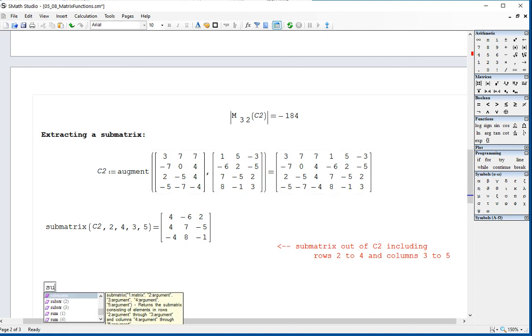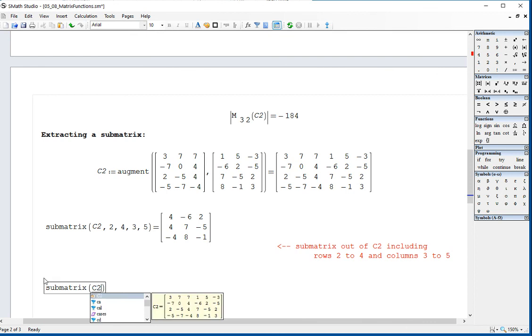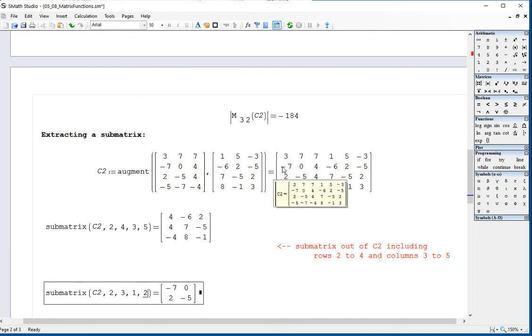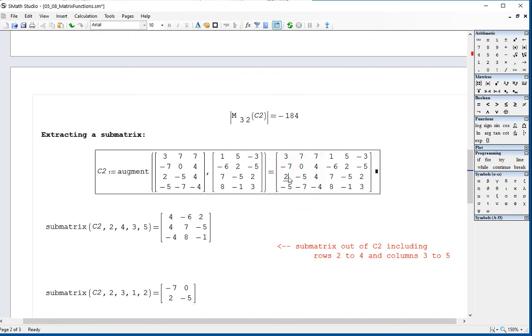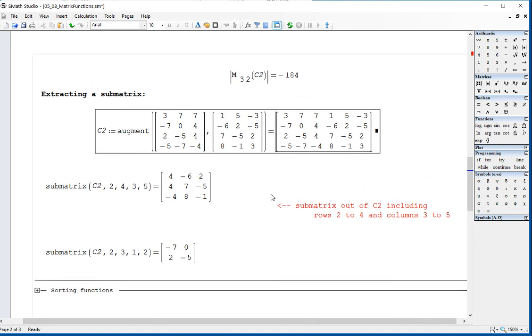I could do something like submatrix C2. And let's say we're going to do the second and third rows and we're going to do the first and second columns. And so the second and third rows will be this and this one. And the first and second column, let's start with three and seven. So that gives me a two-by-two matrix. And this is also useful for programming.